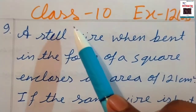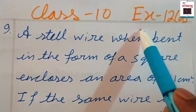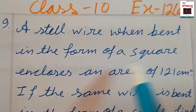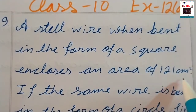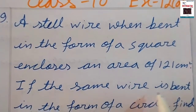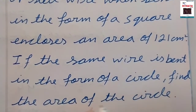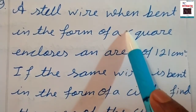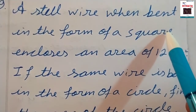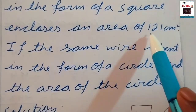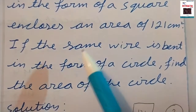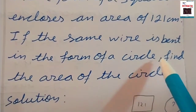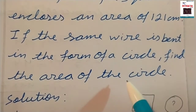Hello everyone. I am looking at Class 10 math, Exercise 12a. A wire bent in the form of a square encloses an area of 121 centimeter square. If the same wire is bent in the form of a circle, find the area of the circle. The wire has been bent into a square with area 121 centimeter square, and if bent into a circle we need to find the area.